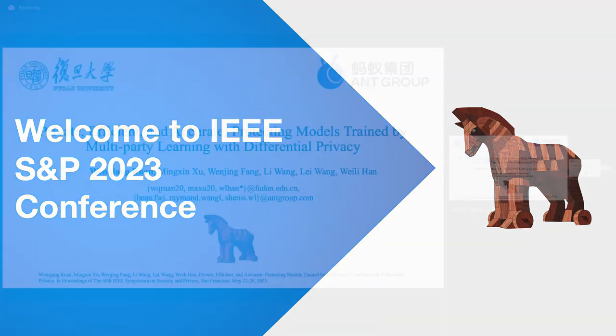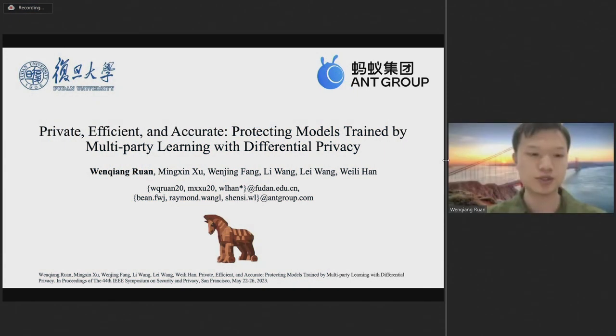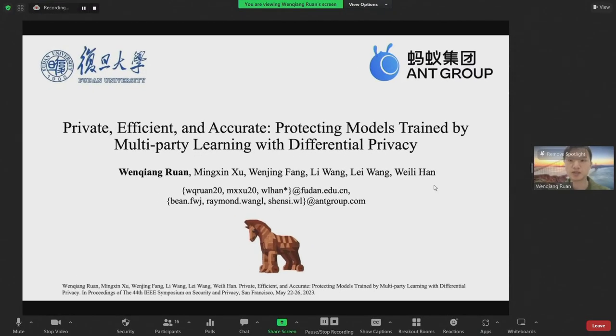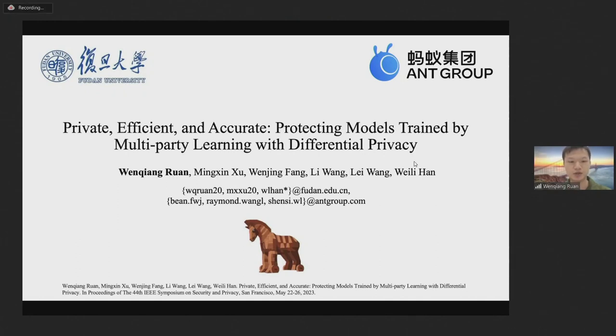Hello everyone, I'm Wenqiang from Fudan University. It's my pleasure to present our paper, Private, Efficient and Accurate: Protecting models trained by multi-party learning with differential privacy here. This is joint work with Mingxin Xu and Weilihan from Fudan University, Wen Jingbang, Li Wang, and Lei Wang from Ant Group.